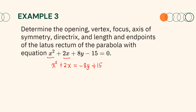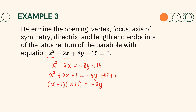Next, complete the square on the left side. We have x squared plus 2x plus 1 equals negative 8y plus 15 plus 1. Factoring the left side and simplifying the right side gives (x plus 1)(x plus 1) equals negative 8y plus 16. Expressing these as a square of a binomial gives (x plus 1) squared, and factoring out negative 8 on the right side gives negative 8(y minus 2). Therefore, the standard form is (x plus 1) squared equals negative 8(y minus 2), giving h equal to negative 1 and k equal to positive 2.